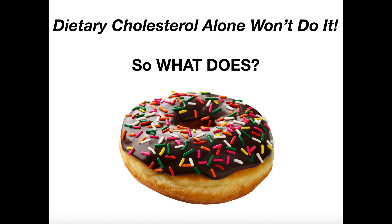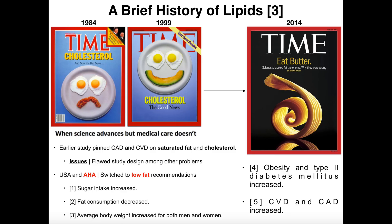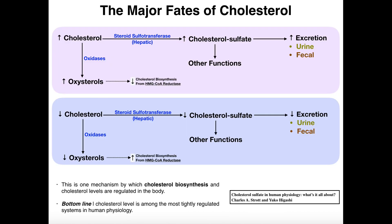In the previous video I went into a lot of the history of lipids — how we as a society in the United States pinned all sorts of diseases like obesity, type 2 diabetes mellitus, cardiovascular disease, and coronary artery disease on consumption of cholesterol and saturated fat. I also covered how cholesterol levels are regulated in the body through excretion of cholesterol metabolites and the production of oxysterols, which serve as a negative feedback mechanism on cholesterol biosynthesis. The bottom line is that the cholesterol level in your body at any given time is one of the most tightly regulated systems in human physiology.